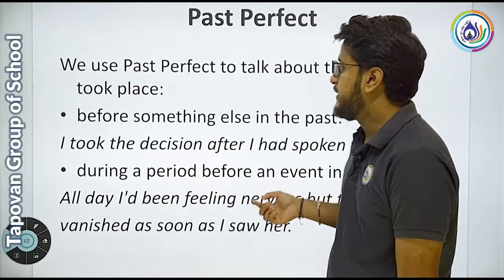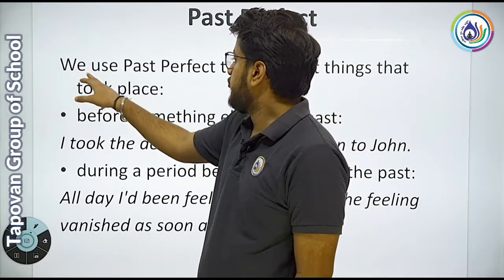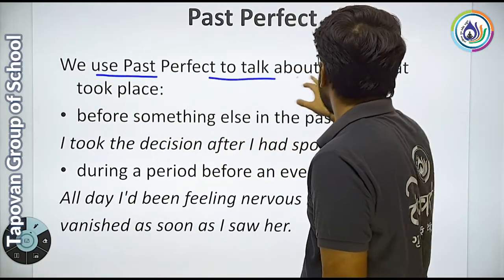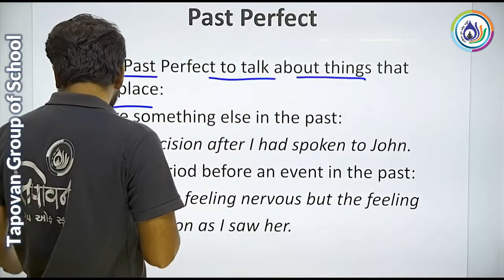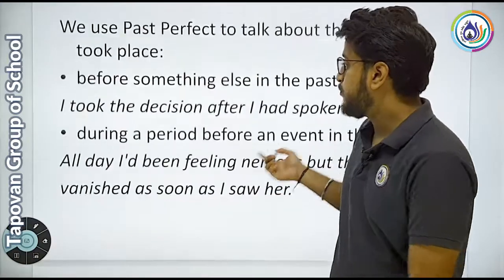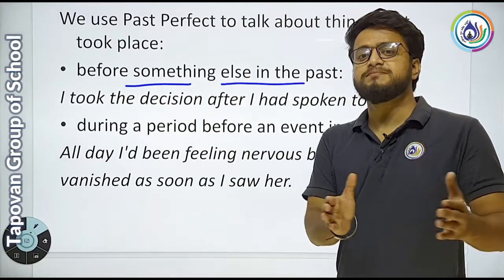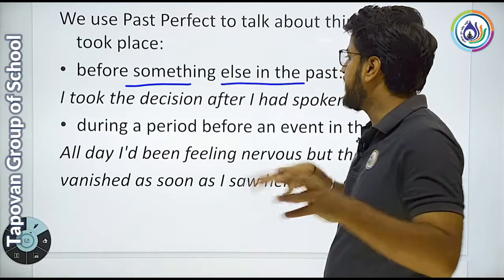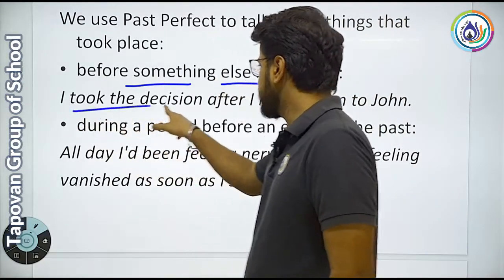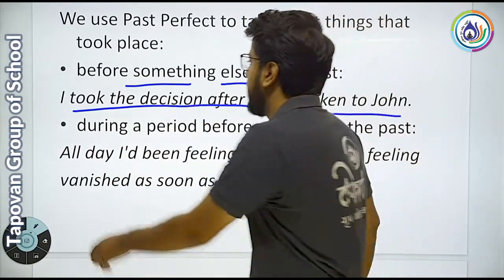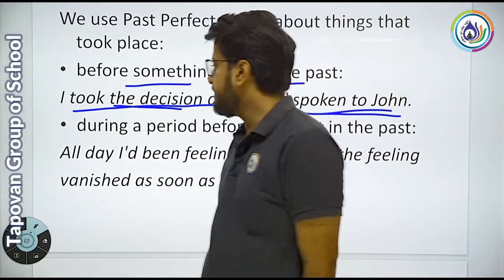We use past perfect to talk about things that took place. हम past perfect ऐसी चीज़ों के लिए use करते हैं. Point number one: before something else in the past. Before यानि कुछ होने से पहले past में अगर हम कोई चीज़ बता रहे हैं, that is known as past perfect tense. Example: I took the decision after I had spoken to John. मैंने यह decision लिया — after I had spoken to John — जब मैंने John से बात की तब.